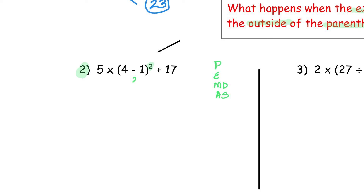Rewrite everything else so I can make sure I get the correct answer. Parentheses done. Exponent: do I have an exponent? Yes. Three to the second power is three times three, so now I have nine. Rewrite everything else — you should be doing this along with me. Next, I have five times nine, which is 45, plus 17. And I get a final answer of 62.